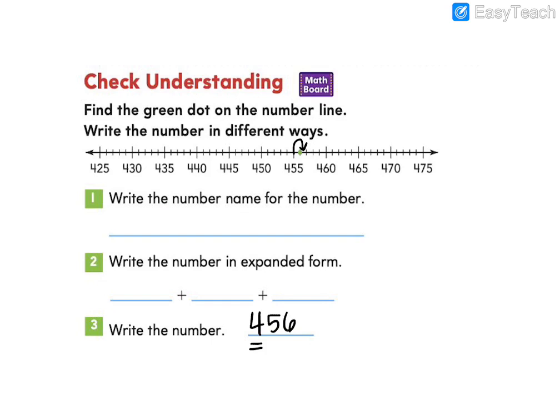I'm going to work backwards and write in expanded form. I have a digit four in the hundreds place. I know the value of that digit is 400. My digit five in the tens place has the value of 50. And my digit six in the ones place has the value of six. Now again, I'll start with the greatest place value to write the number name.